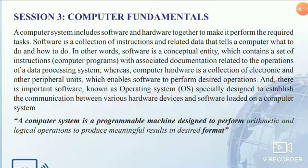A computer system includes software and hardware together to make it perform the required task. Software is a collection of instructions and related data that tells a computer what to do and how to do it. In other words, software is a conceptual entity which contains a set of instructions with associated documentation related to the operations of a data processing system.